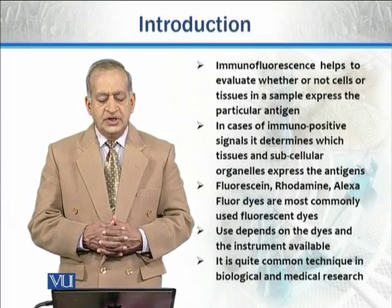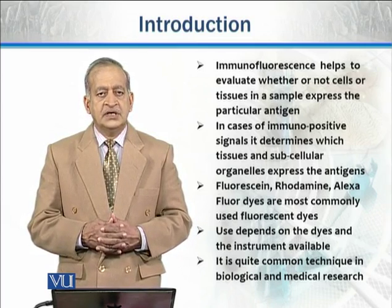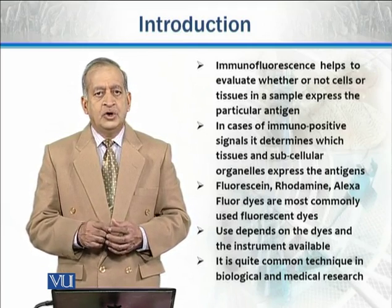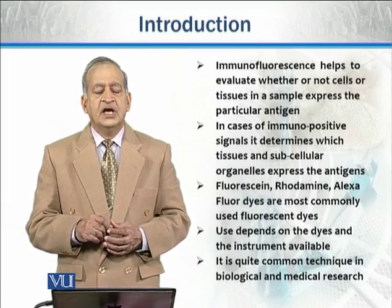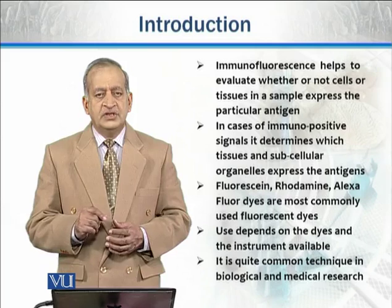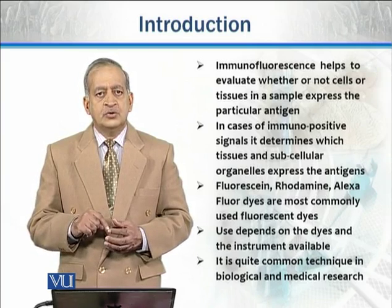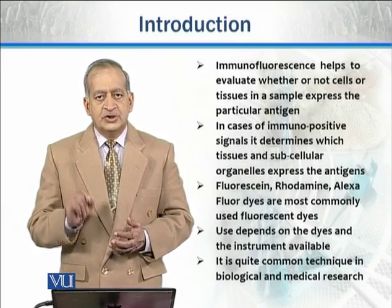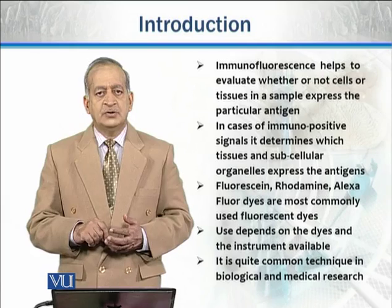Immunofluorescence helps to evaluate whether or not cells or tissues in a sample express a particular antigen. If the cells are stained with that particular labeled antibody, it means that antigen is present. If it is not stained, then that particular antigen is not present. Along with these stainings, we use control samples — negative control and positive control — which help us evaluate whether those cells express those antigens or not.